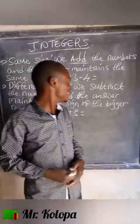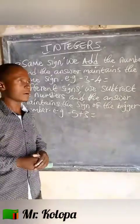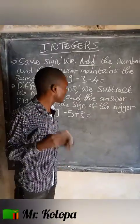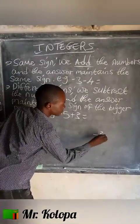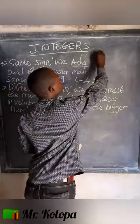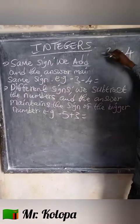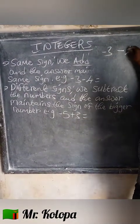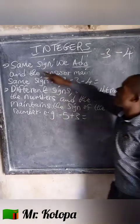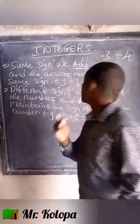I am sure you have answered these two questions correctly. Let's try to answer them. We are saying same signs — we add the numbers and the answer maintains the same sign. When you are saying same signs, what does that mean? Let's look at this. The number 3 has a negative sign, and 4 also has a negative sign, which makes this question fall under the same signs, because 3 is having a negative and 4 is also having a negative.